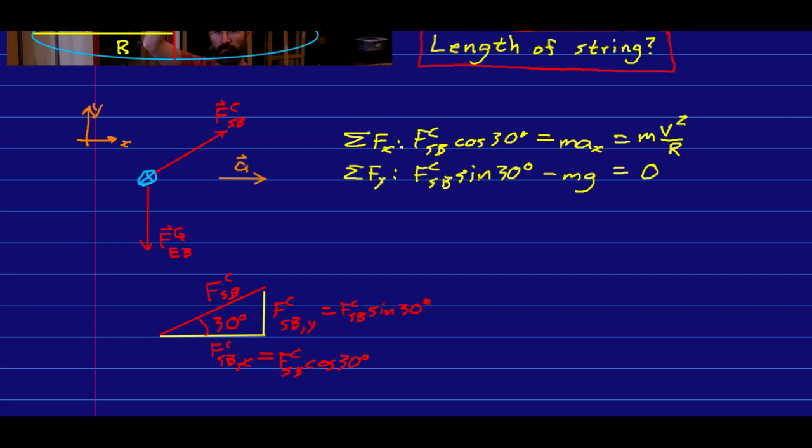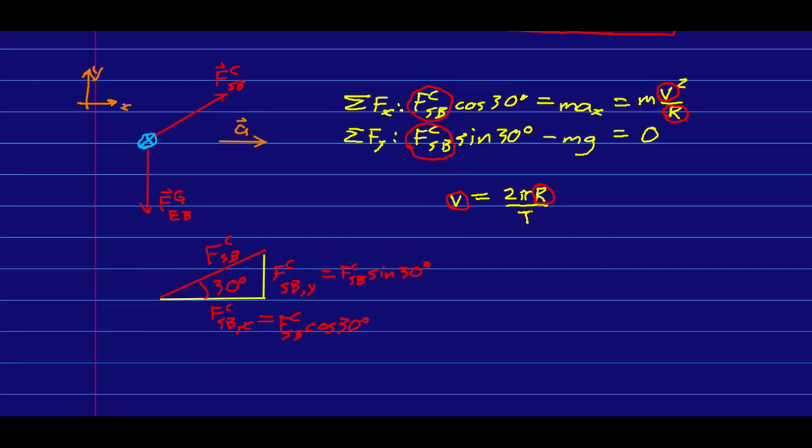Let me just count my unknowns. I have the force due to the string as one unknown. So at the moment, there's no point really doing any algebra, because I can't possibly solve this. But there is something else I know. I know that v is the circumference divided by the period, and I know the period. So this has added no new unknowns, because I already had v and r as unknowns. So now I have three equations and three unknowns, and I can solve.